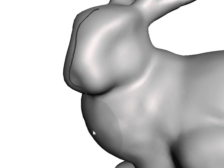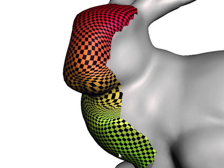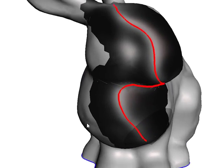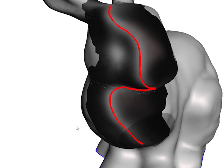In this example we snap the user's stroke to the occluding contour from this viewpoint. The calculated image map is displayed on the surface.